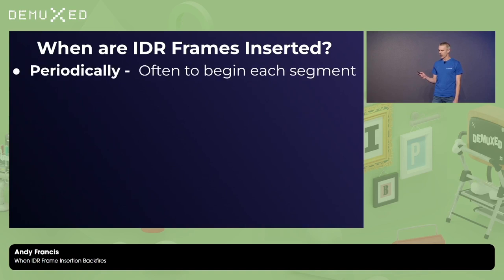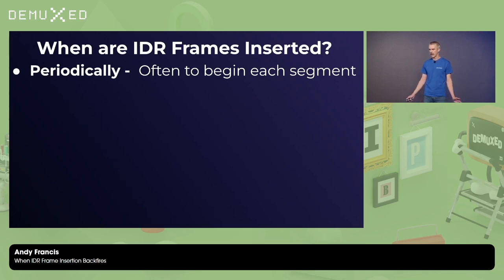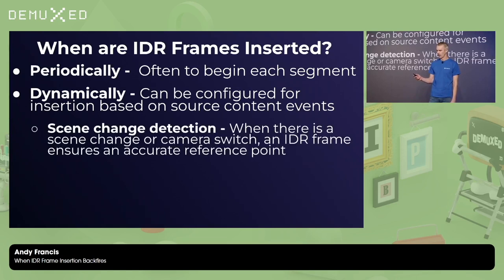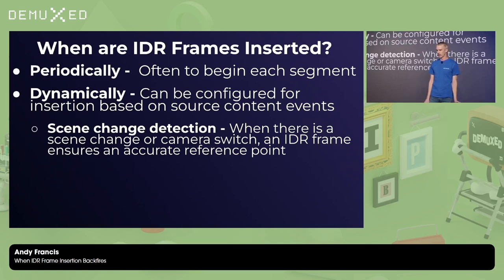When are they inserted? Periodically, often to start off a group of pictures or segments — depends a bit on your keyframe interval and GOP size. They can also be inserted dynamically based on events or signals within the source stream. One of the most common use cases is around scene change detection. Especially if you're in the middle of a GOP when a camera switch happens, inserting an IDR frame makes sure that the frames that follow have a clean reference point to decode from and aren't giving you residual artifacts for the next few seconds that might be noticeable by the user.